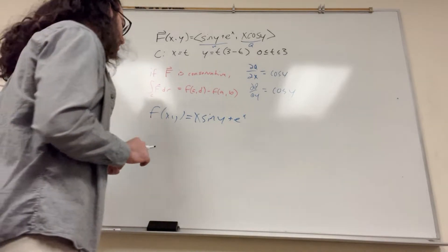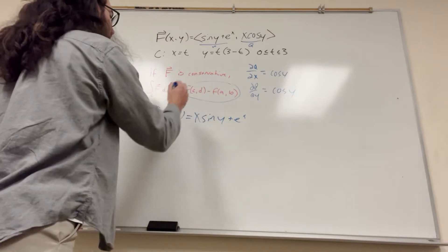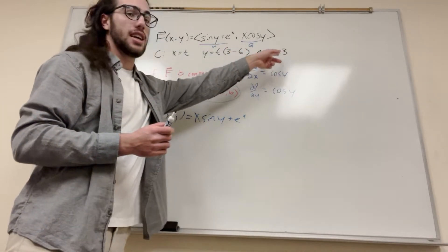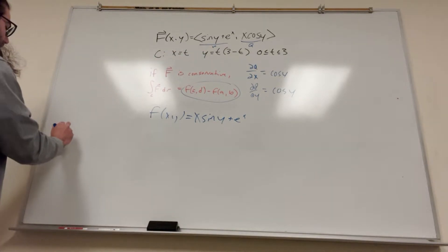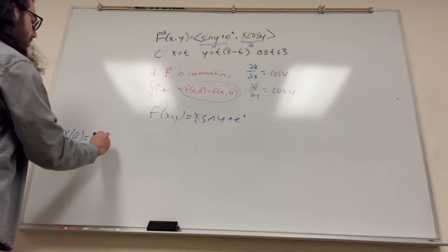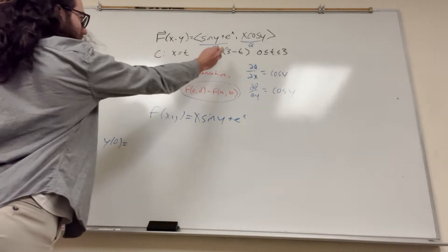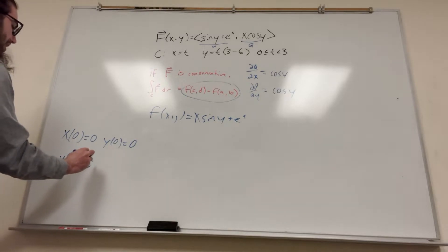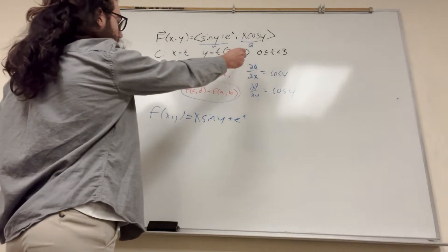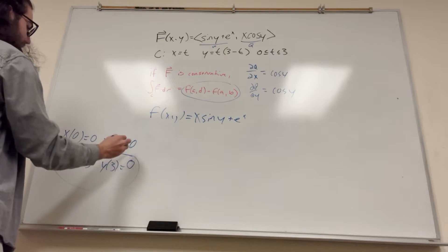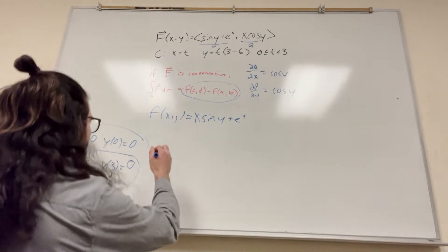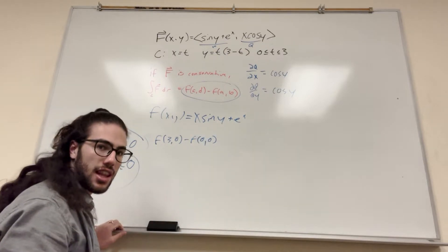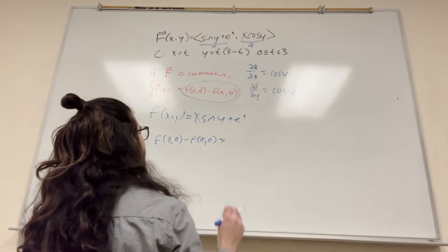We need our starting and ending endpoints, which the problem gives us. It starts at t equals 0 and ends at t equals 3, with x and y given in terms of t. So x of 0 equals 0 and y of 0 equals 0, giving us starting point (0, 0). Then x of 3 equals 3, and y of 3 equals 3 minus 3, which is zero — so our endpoint is (3, 0). So we can say the line integral equals f(3, 0) minus f(0, 0).